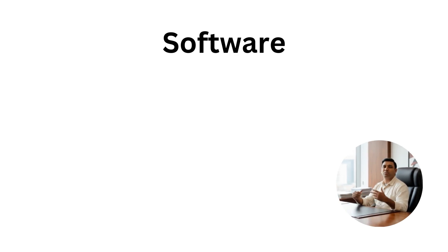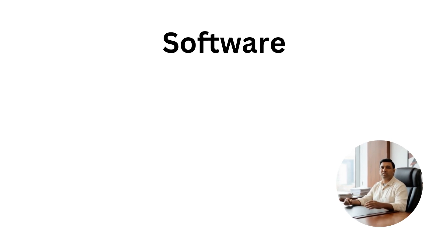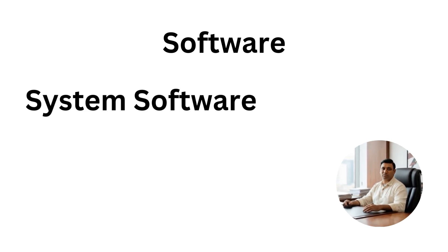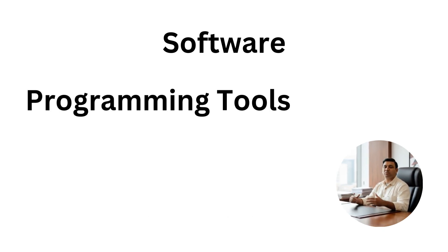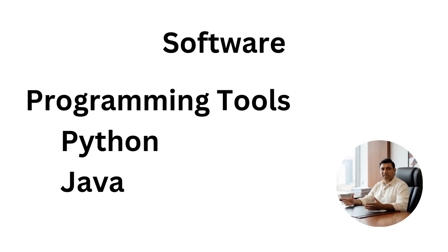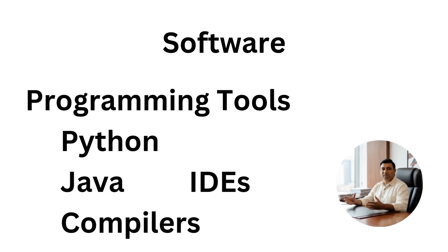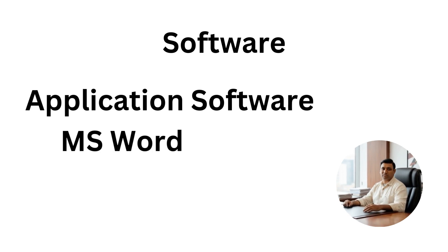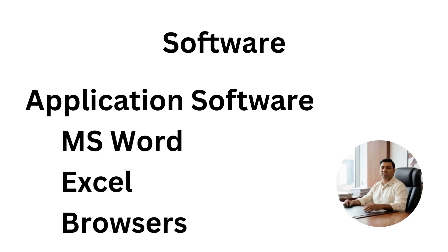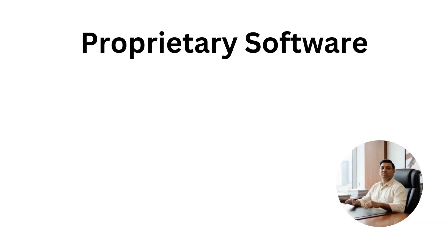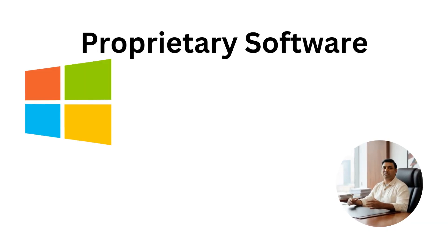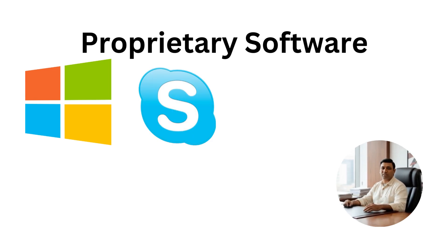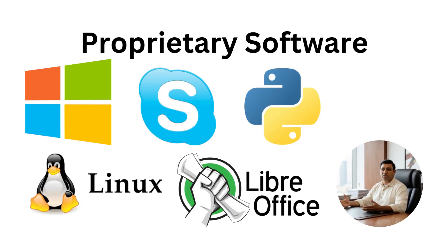Software. Hardware cannot work on its own — it needs software. Software is divided into three main categories: system software, like operating systems, utilities, and device drivers; programming tools, like Python, Java, compilers, and IDEs; and application software, like MS Word, Excel, browsers, games, and custom apps. Software can also be proprietary — paid, like Windows; freeware — free but closed source, like Skype; or open source, like Python, Linux, and LibreOffice.